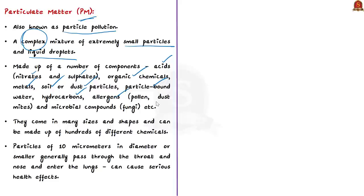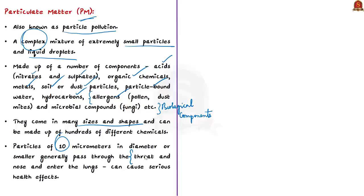These particles come in many sizes and shapes and can be made up of hundreds of different chemicals. Particles of 10 micrometers in diameter or smaller generally have the capability to pass through the throat and nose and enter the lungs. Once inhaled, these particles can affect the heart and lungs and cause serious health effects.